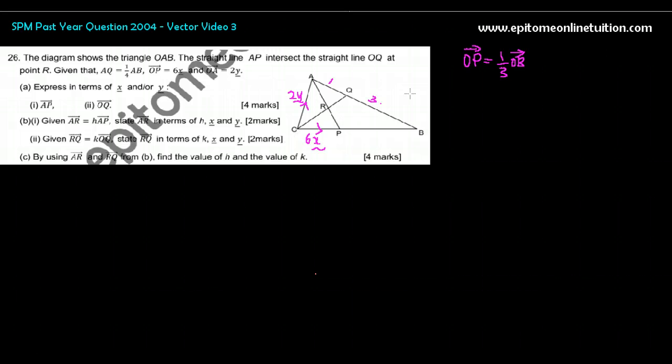So that means, let's put in the relevant information. If OP is 1/3 of OB, that would mean if OP is 6X, then PB will be 12X. Because it's 1 third, that means OB is 18. The whole thing is 3 times of it, so this is twice of it. So 6X and 12X over here. Now let's start.